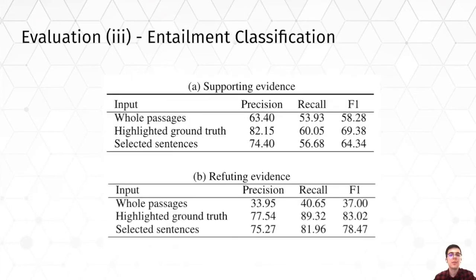This table shows the performance of the entailment classification model when classifying input evidence as supporting or refuting the claims. The input evidence can be the whole passage, ground truth evidence sentences, or sentences selected by the sequence labeling model. We observe that the entailment classification model performs poorly when whole passages are passed as input. However, when specific sentences are passed as input, precision, recall, and F1 improve. The reason is that our entailment classification model is trained mostly on short premises, so it performs better on sentence-level evidence compared to longer passages. Apart from improved performance, sentence selection also provides better explainability.